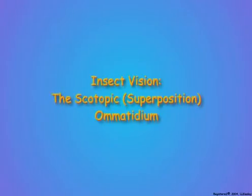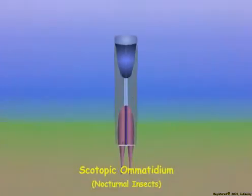Omatidia in the compound eyes of nocturnal insects are referred to as scotopic omatidia. The structure of scotopic omatidia is similar to that of photopic omatidia,